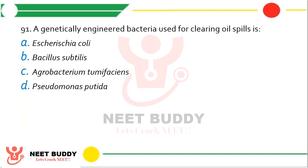Question number 91. A genetically engineered bacteria used for clearing oil spills is: Escherichia coli, Bacillus subtilis, Agrobacterium tumefaciens, or Pseudomonas putida? The correct answer is option D — Pseudomonas putida.